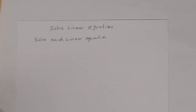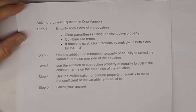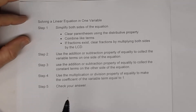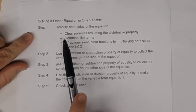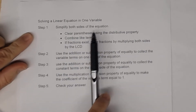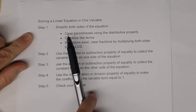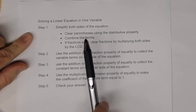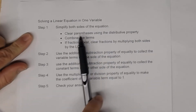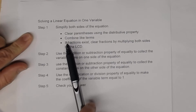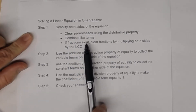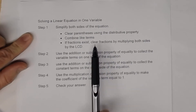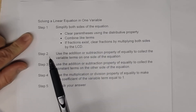In this lesson we're going to discuss how to solve linear equations. Here are the steps to solving a linear equation in one variable. Step one is to simplify both sides of the equation if possible — clear parentheses using the distributive property, combine like terms, and if fractions exist, clear them by multiplying both sides by the least common denominator.